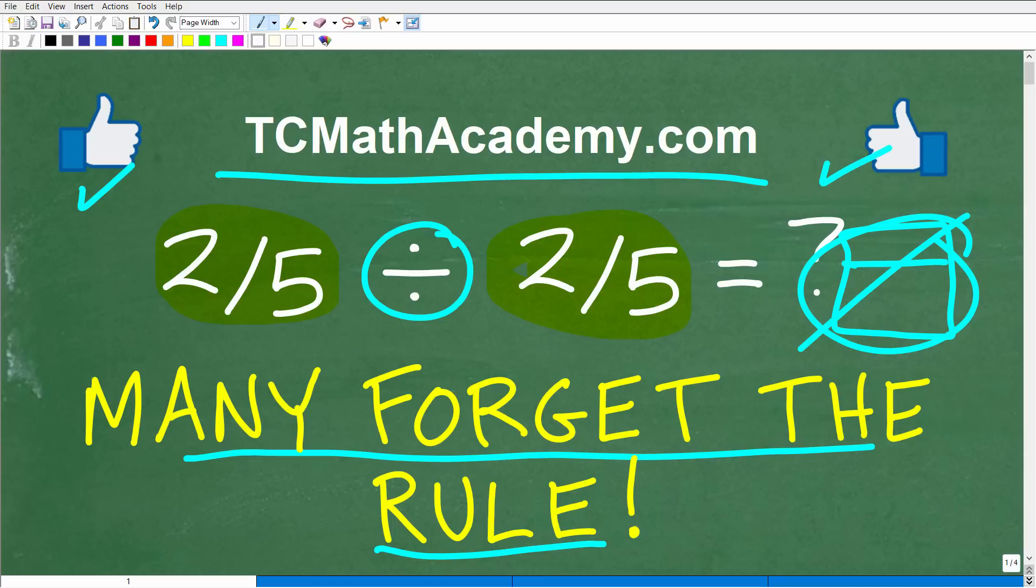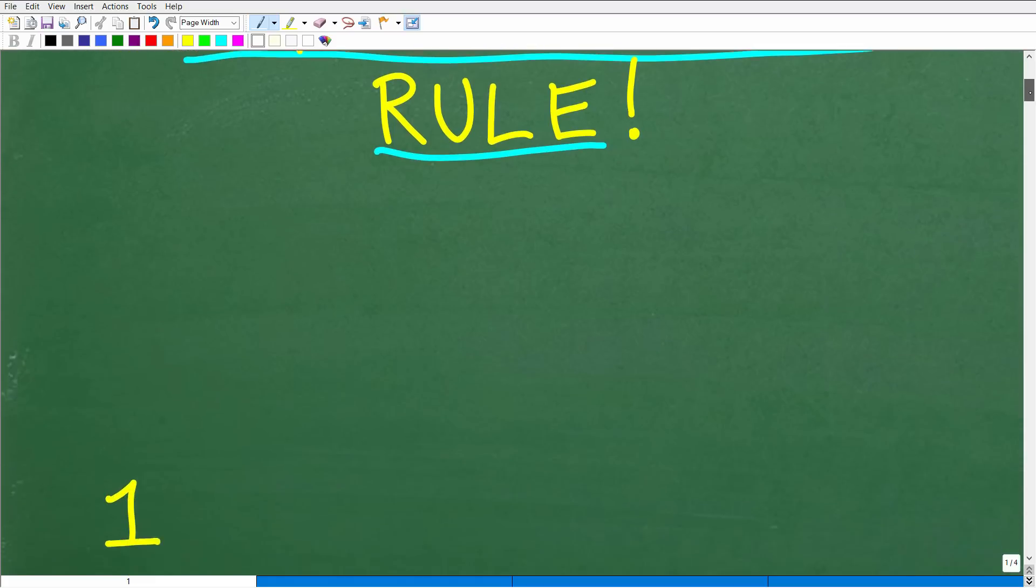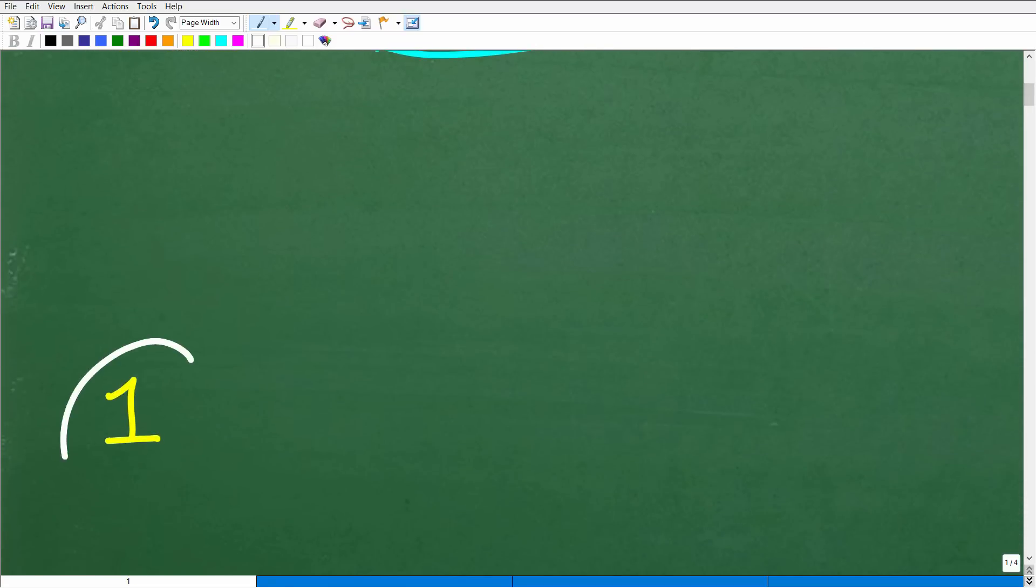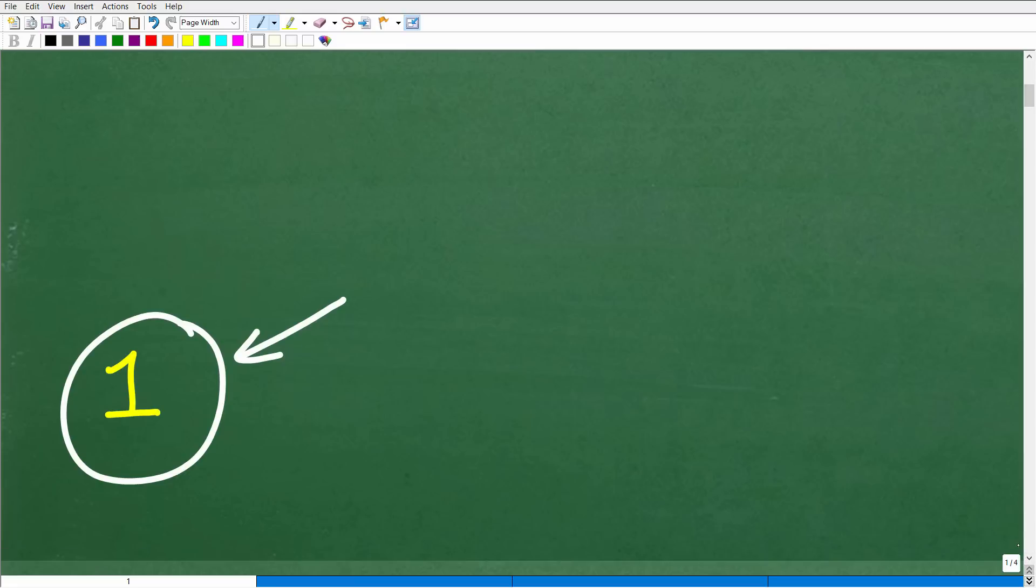Okay. So two fifths divided by two fifths. What is the answer? Well, the answer is one. Hopefully, I made that pretty obvious in terms of what to do. But if you didn't get one, well, you know, don't despair. I'll explain this in a second.